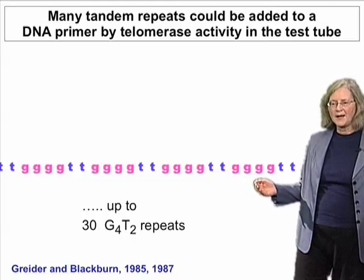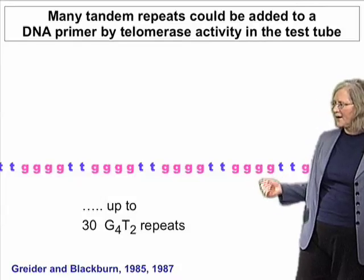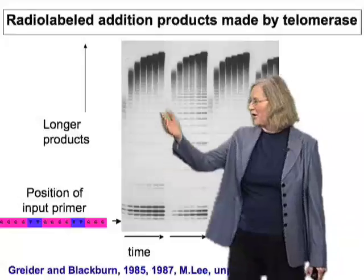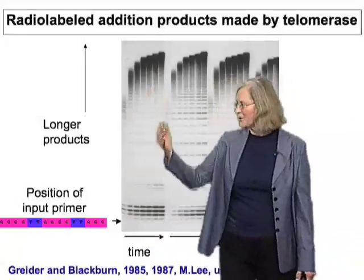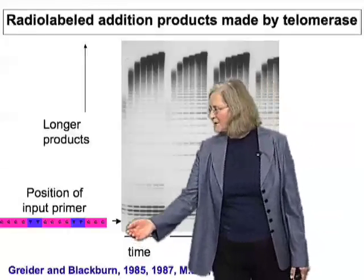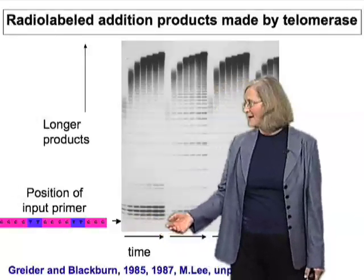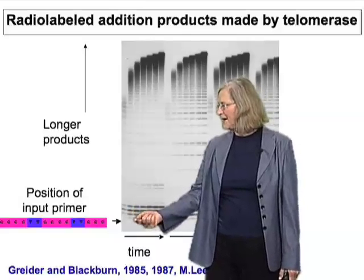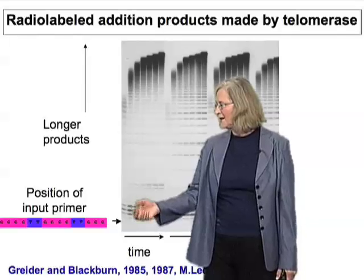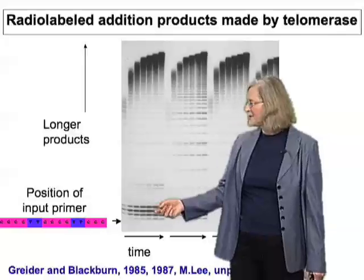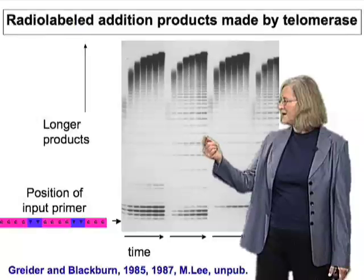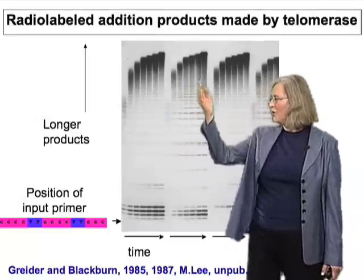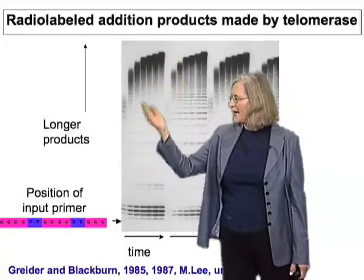This is what telomerase did. The first clue about how it was adding sequence came from looking at the products on a DNA sequencing gel. At increasing time points after incubating the input primer with dGTP and TTP — the dGTP was radio-labeled — every time you see a labeled band, a product has been added. What you can see is a striped pattern: every six nucleotides there was a pause in the addition, showing a pattern of six nucleotides being added per repeat. More and more repeats were being added with time, as shown by bands getting higher and higher.